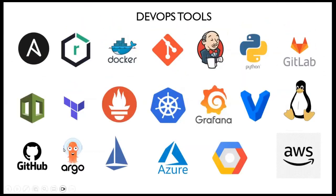Looking at all the tools in this space, one thing is common to almost all of them: they are open source. Jenkins is open source, Python is open source, Git, GitHub, GitLab, Linux — all open source. Minus the cloud providers — Azure, GCP, AWS — those are cloud providers. But Ansible, Docker, Kubernetes, Terraform — all open source.